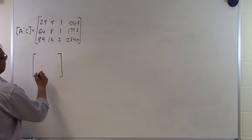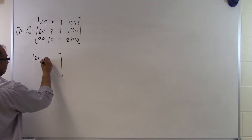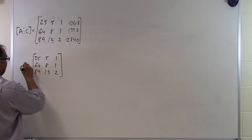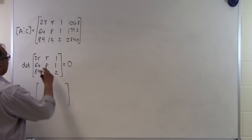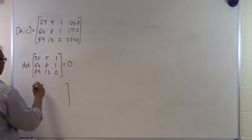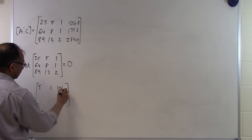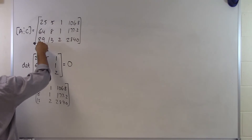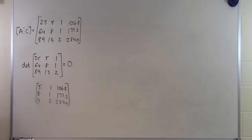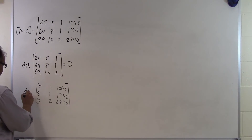I need to look at all 3 by 3 sub-matrices. Taking the first 3 rows and first 3 columns — 25, 5, 1; 64, 8, 1; 89, 13, 2 — the determinant is 0, as we found before. Removing the first column instead, I get 5, 1, 106.8; 8, 1, 177.2; 13, 2, 284.0. The determinant of that sub-matrix also turns out to be 0.